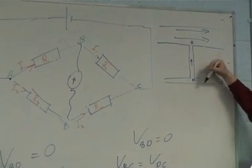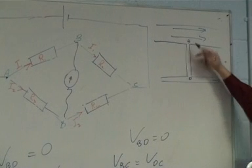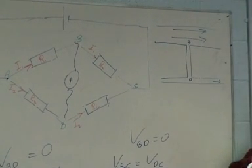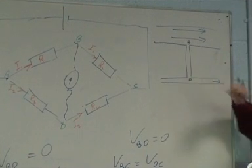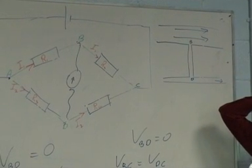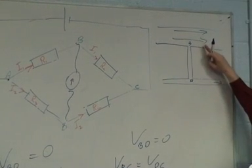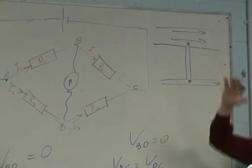Will current always flow from B to D? Sorry, I'll rephrase the question. Under what conditions will current not flow from B to D?